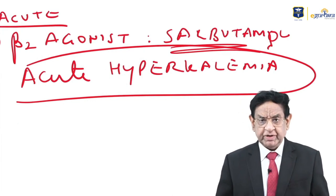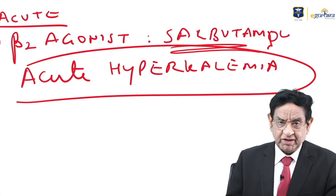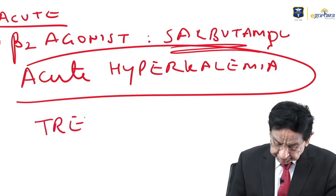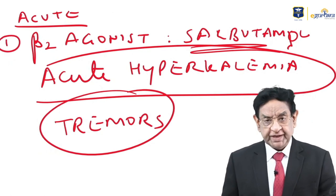Another rank number one question: what is a major side effect of salbutamol? Write down the answer — the answer is tremors. These are very frequently asked, rank number one questions.